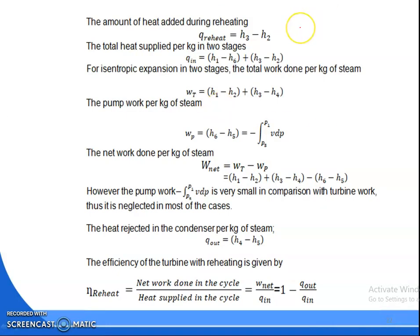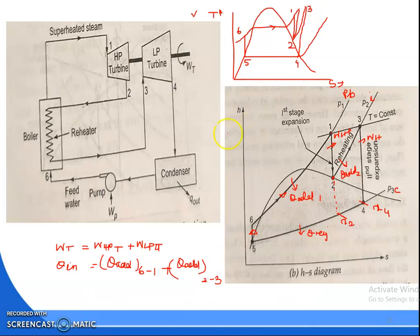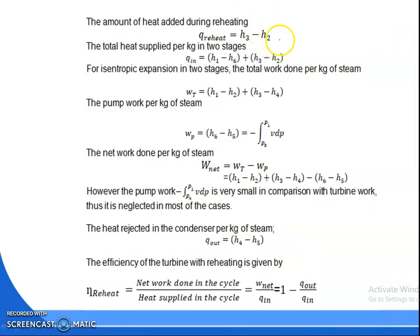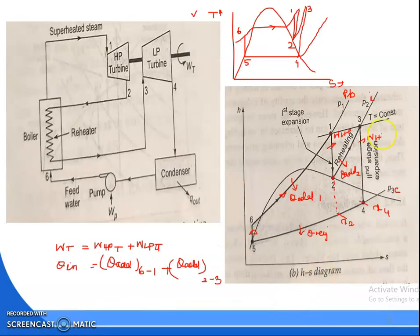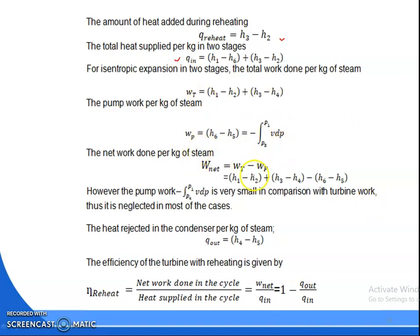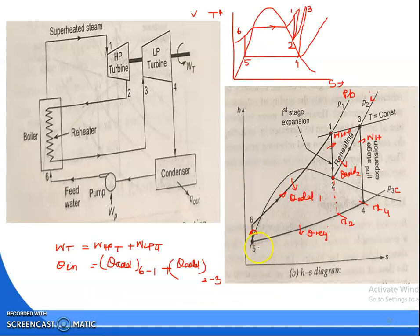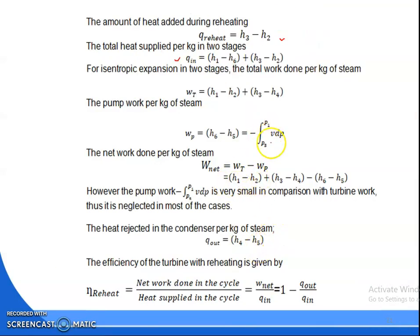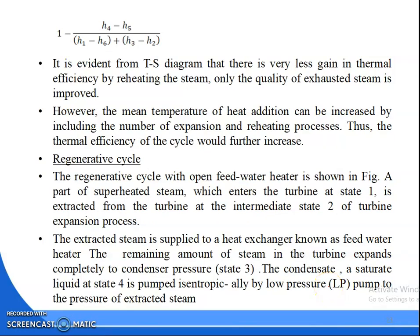The amount of heat addition is H1 minus H6 and H3 minus H2. H3 minus H2 and H1 minus H6 is your heat addition. Turbine work is H1 minus H2 plus H3 minus H4. Pump work is H6 minus H5, which equals V5 times (P2 minus P1). The net work Wnet equals WHP minus WP. From here we can calculate the reheat cycle efficiency, that is Wnet by QN or 1 minus QW by QN.